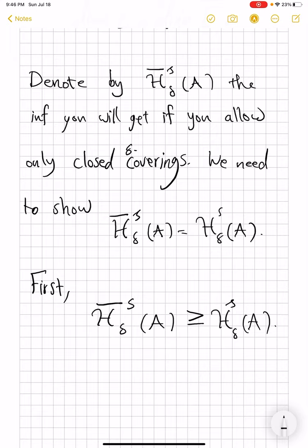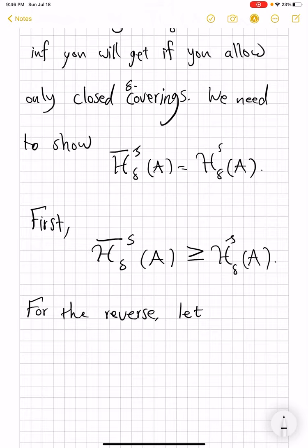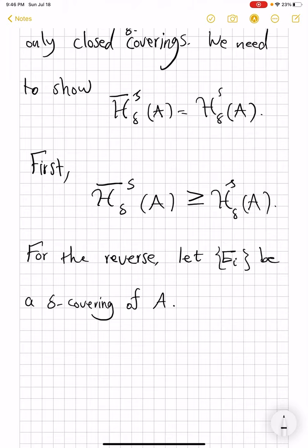So we need to reverse the inequality. For the reverse, let E_i be a delta covering of A by any sets. Then E_i, the same sets now with closure, will be a delta covering. So why is this still a delta covering comes from the fact that the diameter of closures does not increase. So if E_i's were delta covering, E_i closures are delta coverings of A, and this time by closed sets, because we just made them closed.